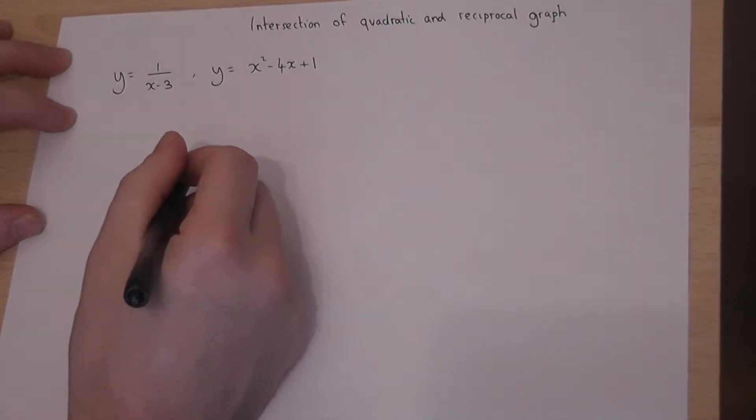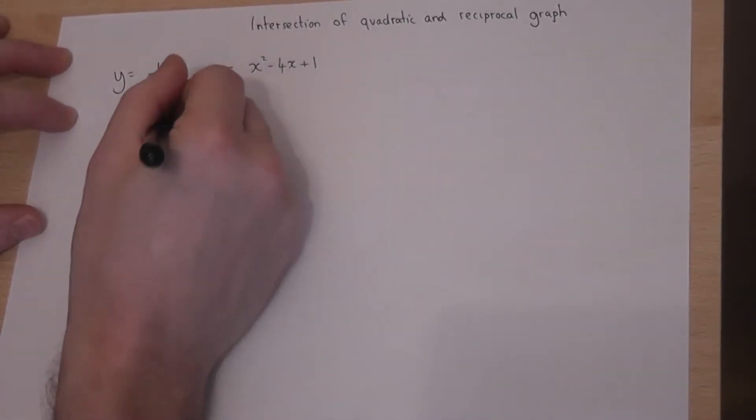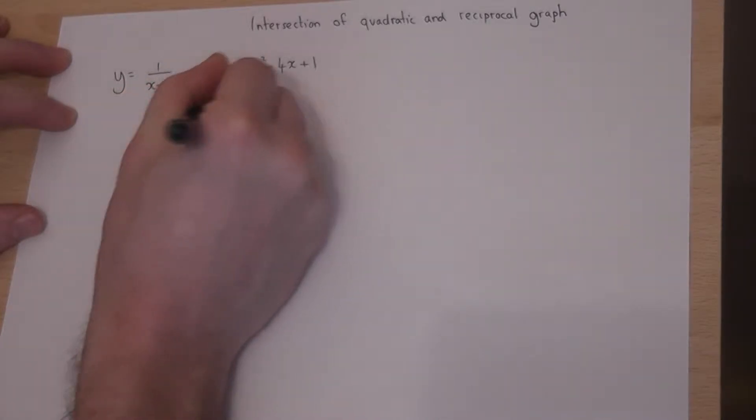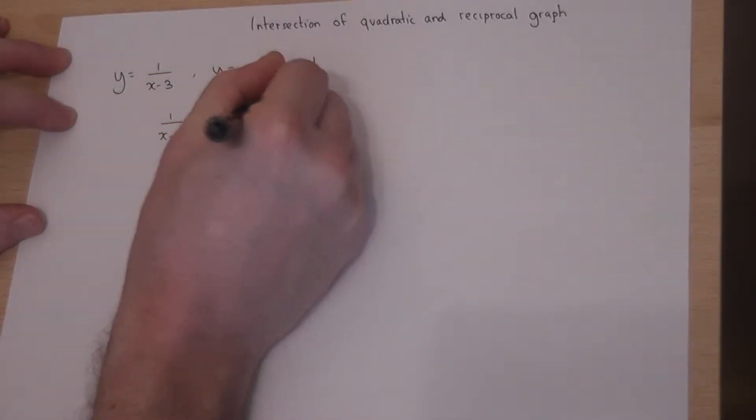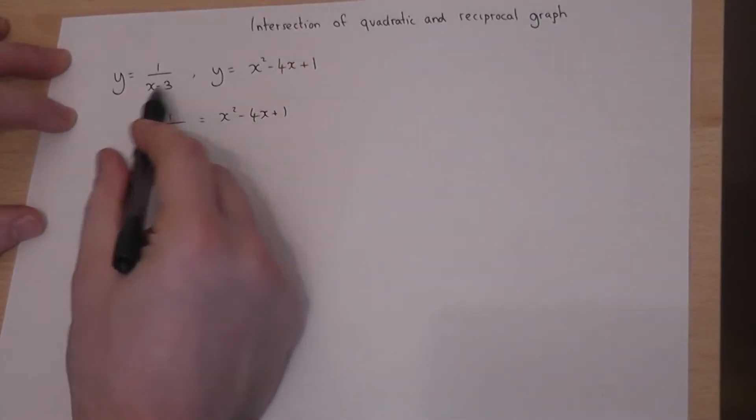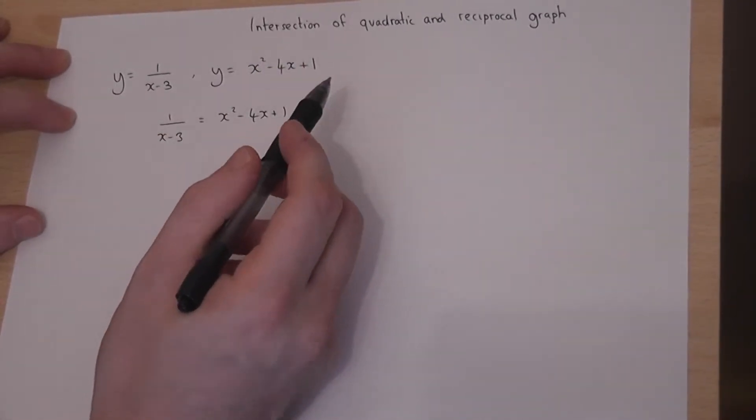So therefore at the point of intersection we can say that 1 over (x-3) must equal x² - 4x + 1, so the two equations must be equal to each other.